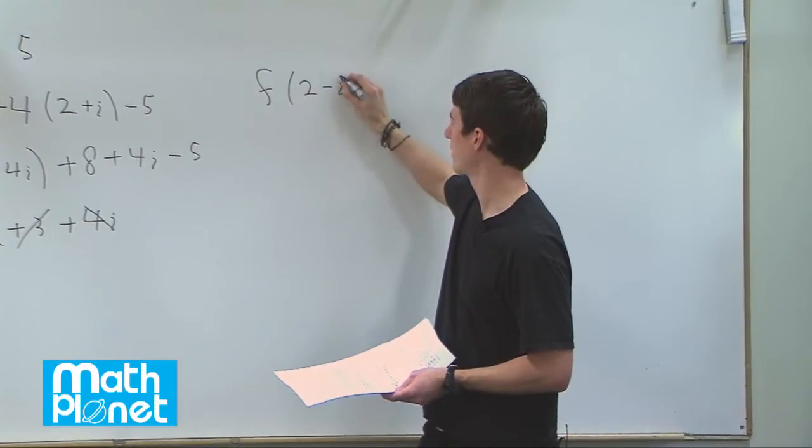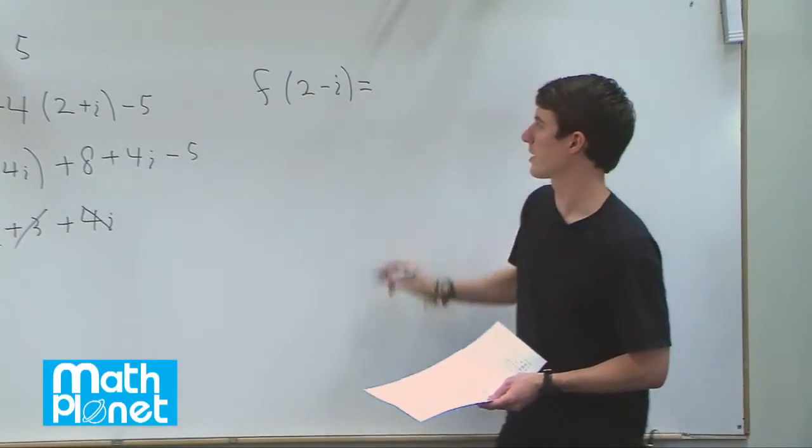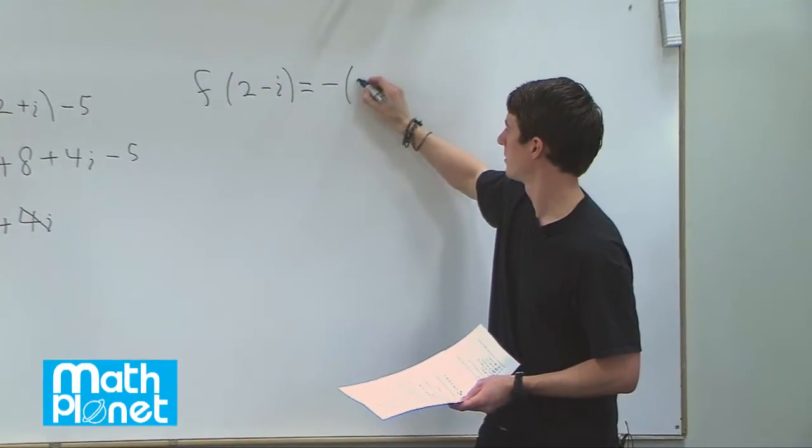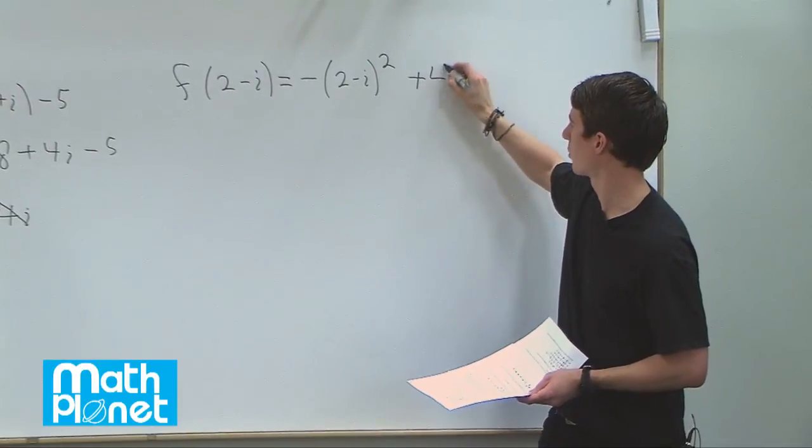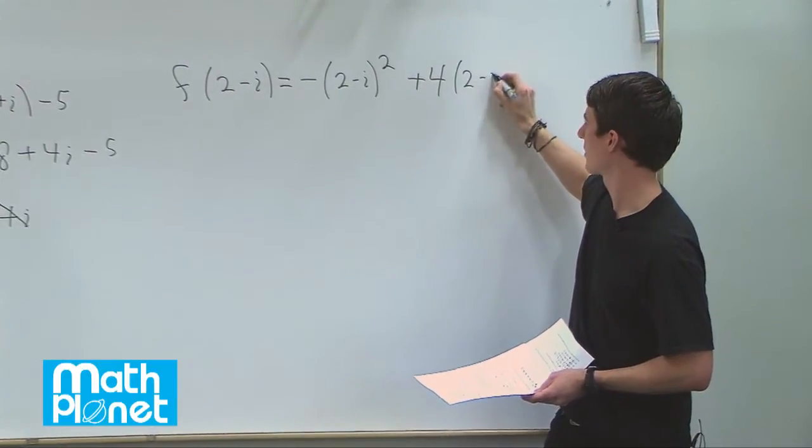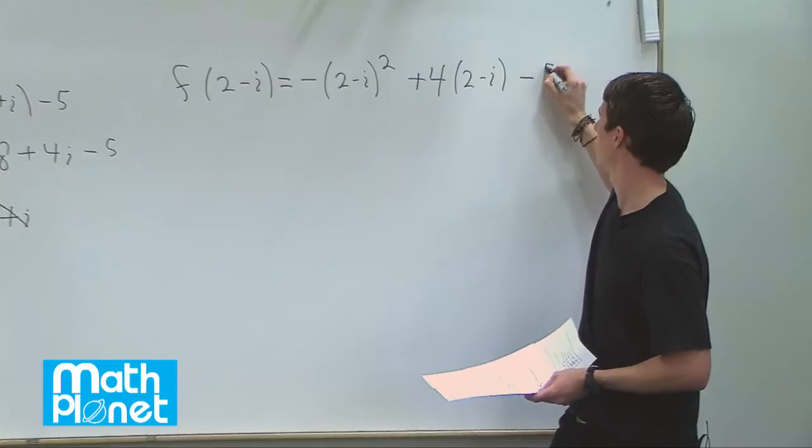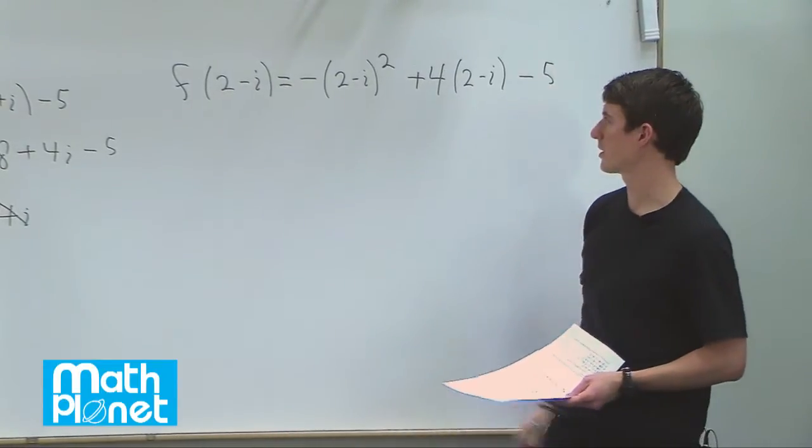f of 2 minus i gives us minus 2 minus i squared plus 4 times 2 minus i minus 5. So let's just expand this out and see what we get.